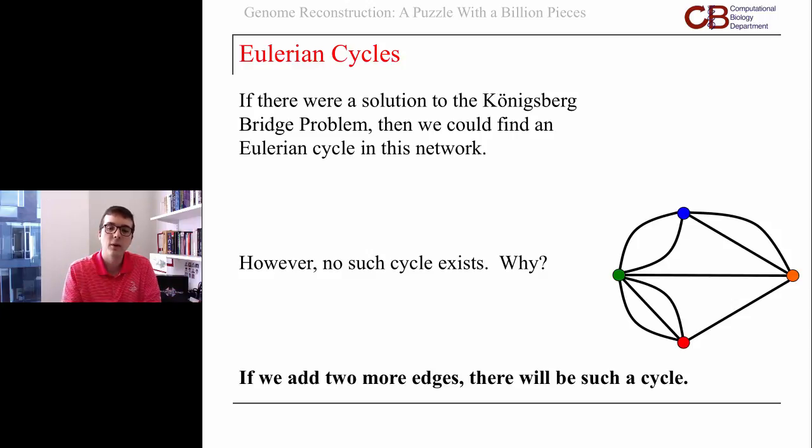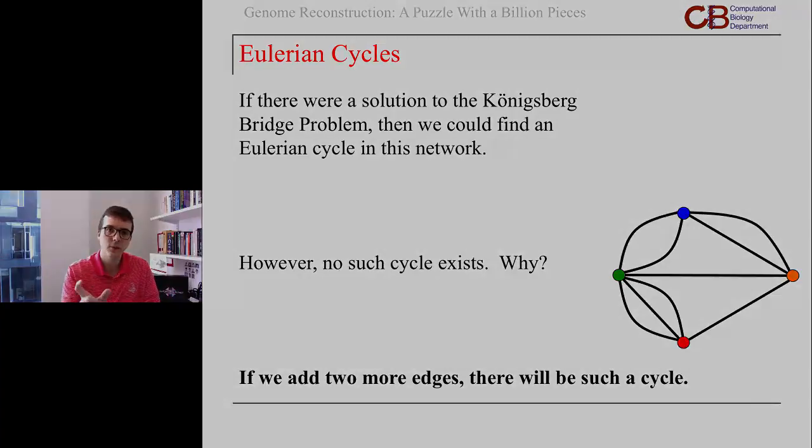We've seen how to frame walking through Königsberg as an Eulerian cycle problem. We've seen how to frame the Icosian game as one example of a much more general Hamiltonian cycle problem. We want to see if we can solve these two problems, and then come back to the issue of how they might be connected to the computational biology problem of assembling little pieces of DNA into a contiguous genome. That's what we'll do next.